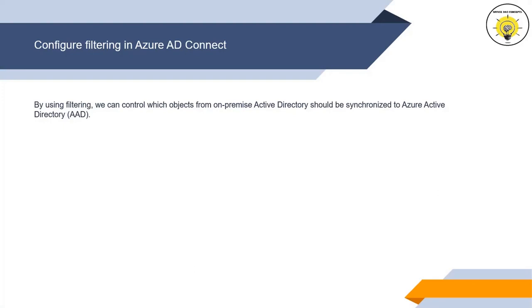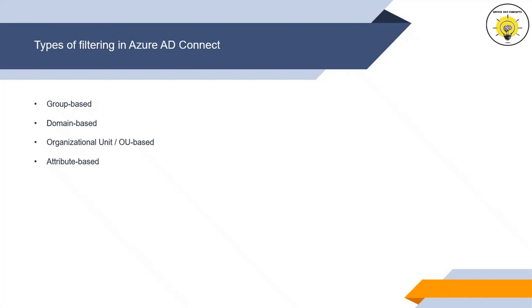By default, Azure AD Connect synchronizes all objects from on-premise Active Directory to Azure Active Directory. But with the help of filtering, we can control which objects we want to synchronize. In Azure AD Connect, we can perform four types of filtering: group-based filtering, domain-based filtering, organizational unit or OU-based filtering, and attribute-based filtering.